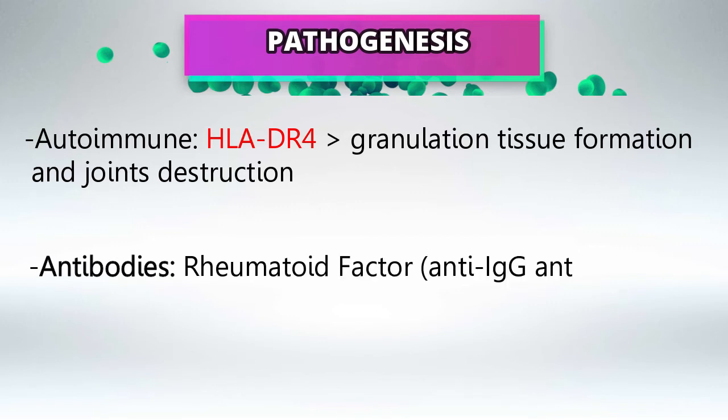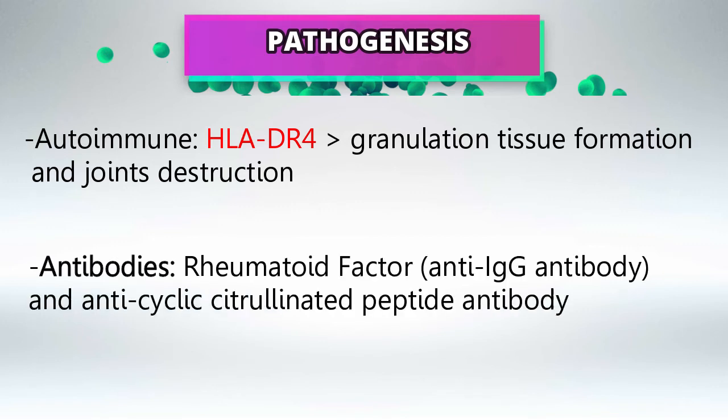There are two main antibodies in rheumatoid arthritis. The rheumatoid factor, which is called anti-immunoglobulin antibody — basically antibody against antibodies — is present in about 80% of cases. And there is anti-cyclic citrullinated peptide antibody, which is the most specific factor for rheumatoid arthritis.